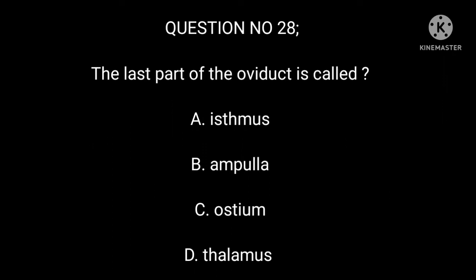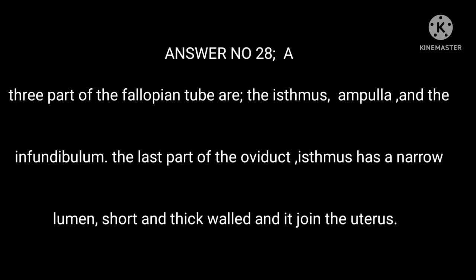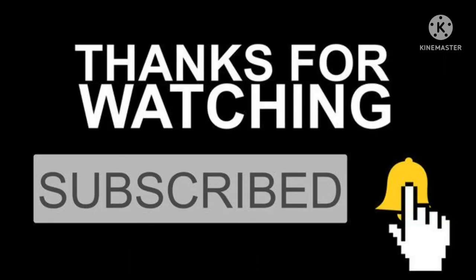Question number 28. The last part of the oviduct is called: A. Isthmus. B. Ampulla. C. Ostium. D. Thalamus. Answer number 28: A. The three parts of the fallopian tube are the isthmus, ampulla, and the infundibulum. The last part of the oviduct, the isthmus, has a narrow lumen, is short and thick-walled, and it joins the uterus. Thank you for watching. Please don't forget to subscribe to my YouTube channel, Nurse Blessing.